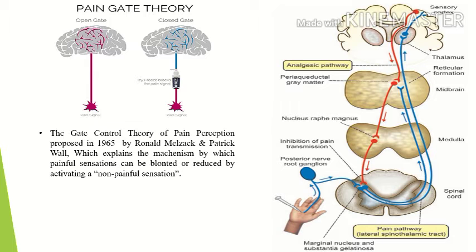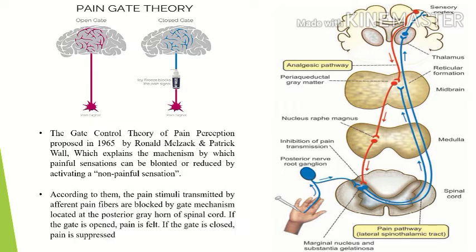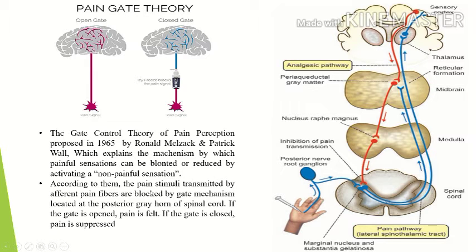According to Melzack and Wall, the pain stimuli transmitted by afferent pain fibers are blocked by a gate mechanism located at the posterior gray horn of the spinal cord. If the gate is open, the pain is felt, and if the gate is closed, the pain is suppressed.